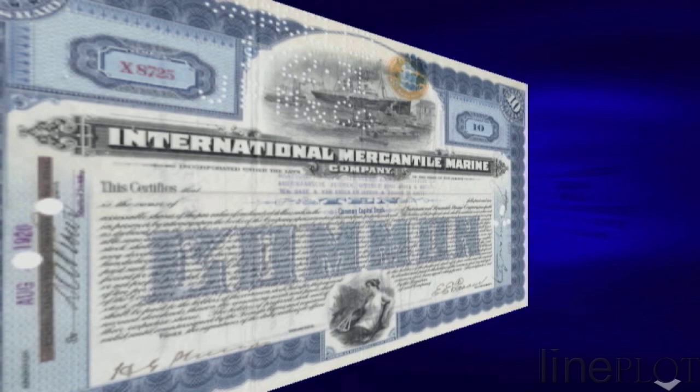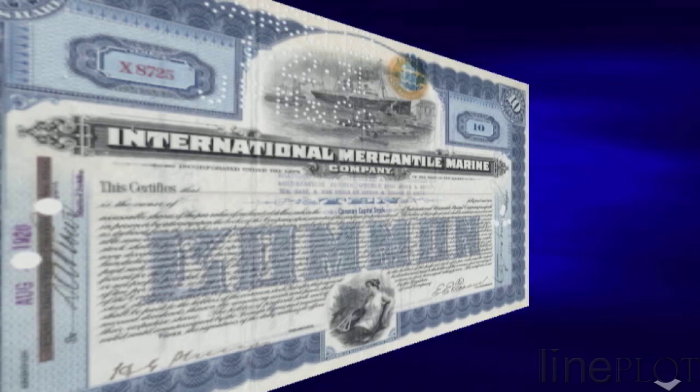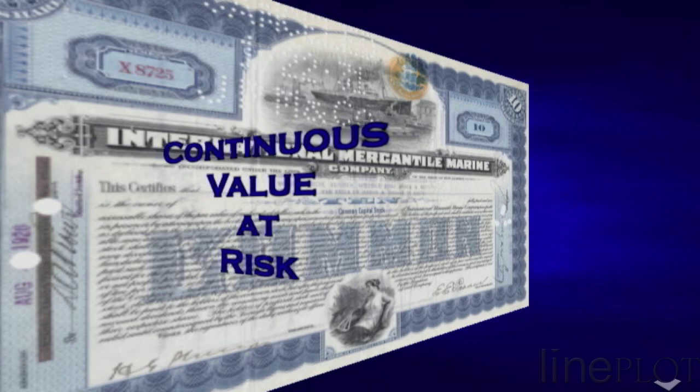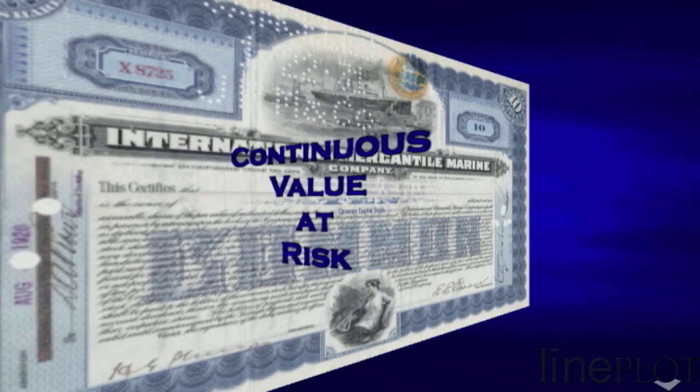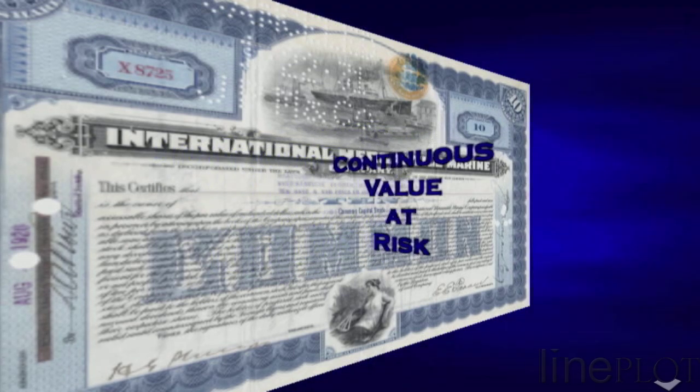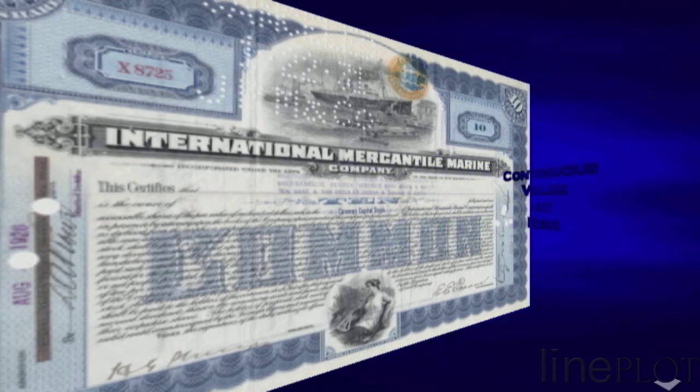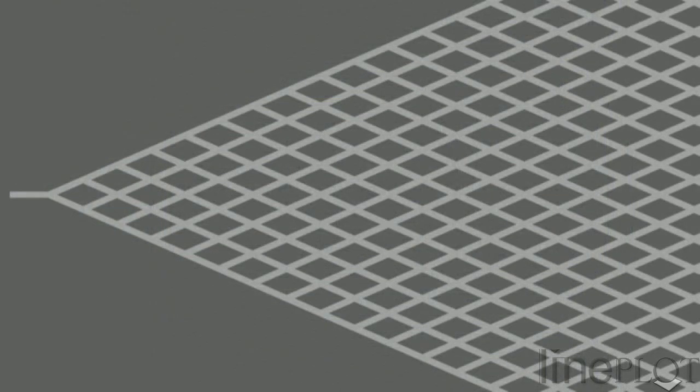Conventional approaches to risk measurement only consider results at the end of the horizon. We have also introduced a new way of measuring value at risk called continuous value at risk. Whereas value at risk measured conventionally gives the worst outcome at a chosen probability at the end of the horizon, continuous value at risk gives the worst outcome assuming the investment is monitored continuously all throughout the horizon. Together, these new risk measures provide investors with a more complete assessment of their investment's exposure to loss. Let us explore the logic behind these innovations.